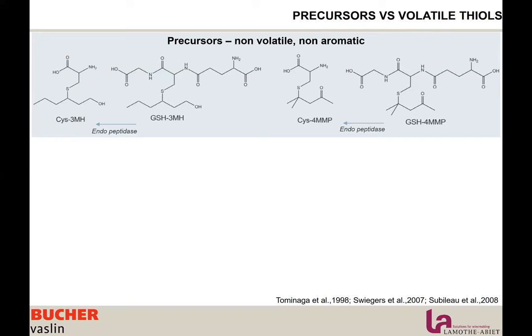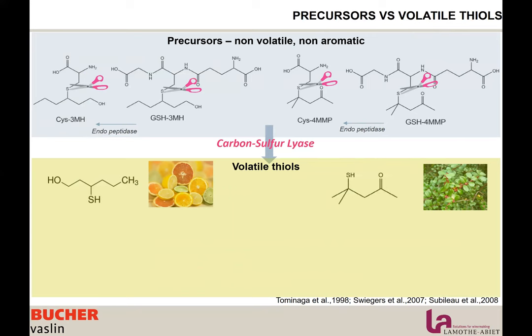We call these glutathionated or cysteine-related compounds, meaning they are precursors — the thiol attached to cysteine or glutathione. These precursors are non-volatile and not aromatic. There are enzymatic activities that transform glutathionated precursors into cysteine precursors. Then during fermentation, the carbon-sulfur lyase activity of the yeast cuts and liberates the thiol from the cysteine portion, releasing volatile thiols.